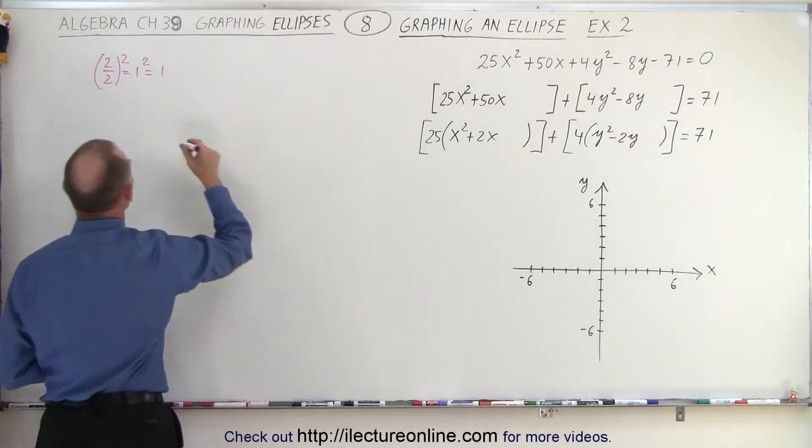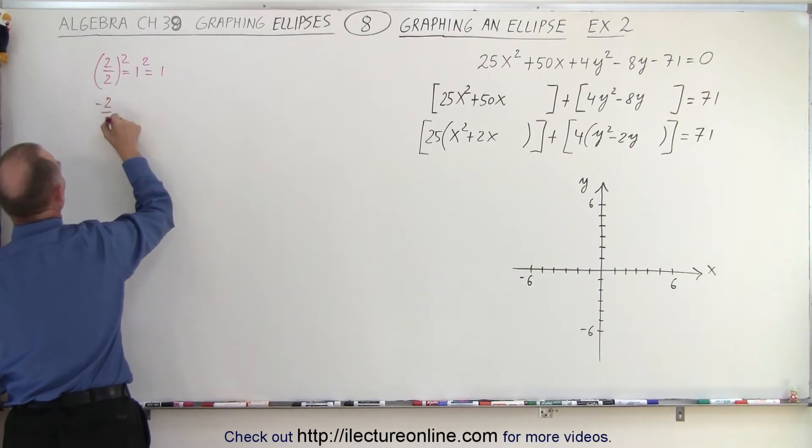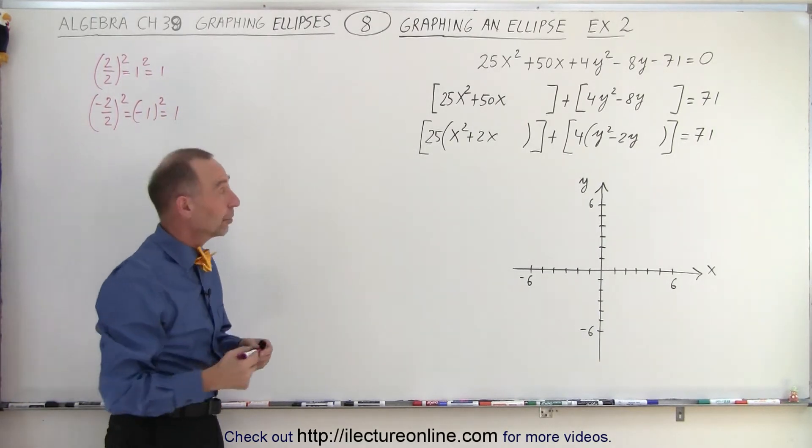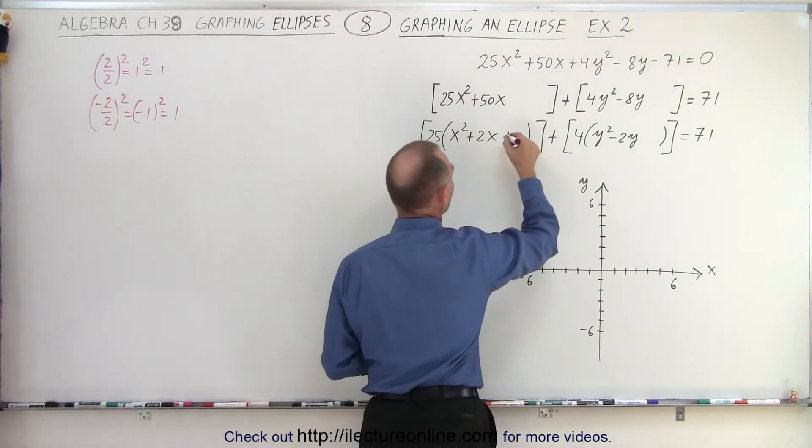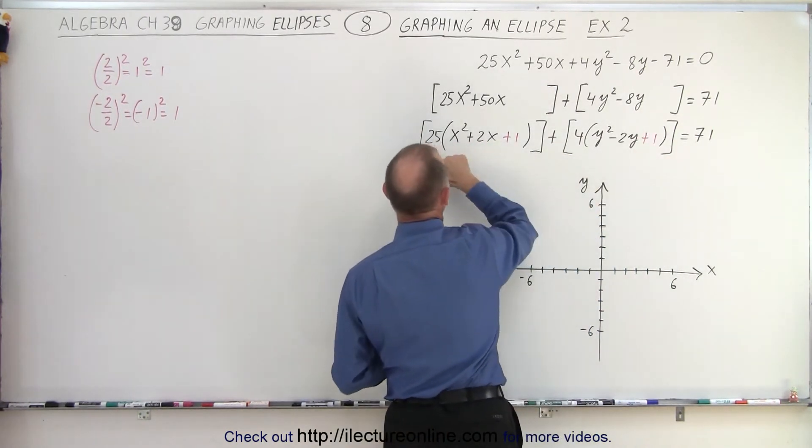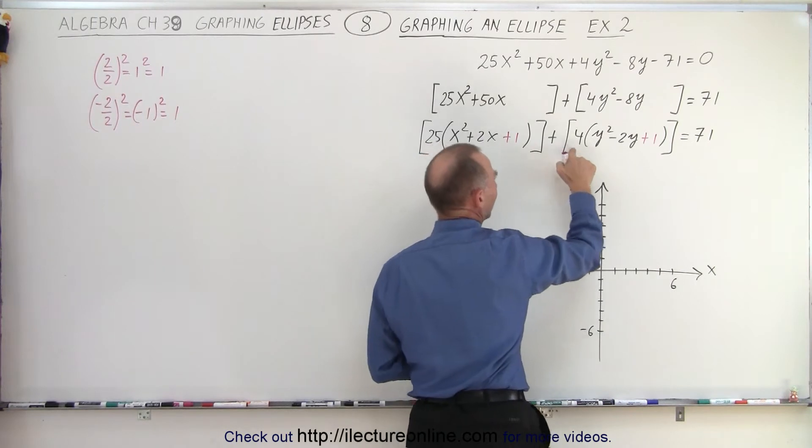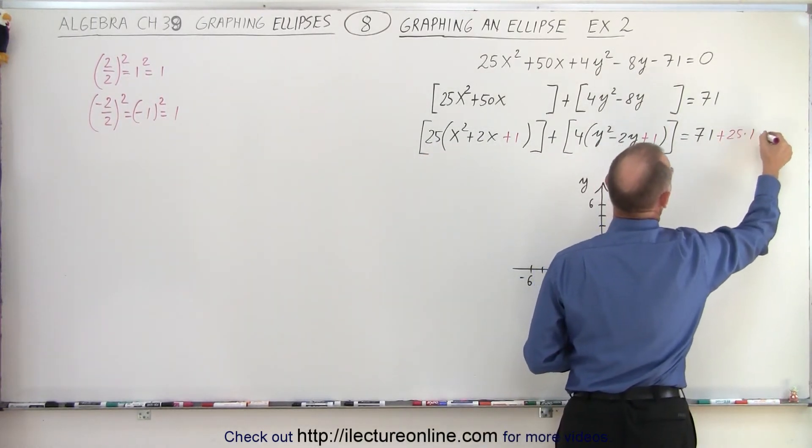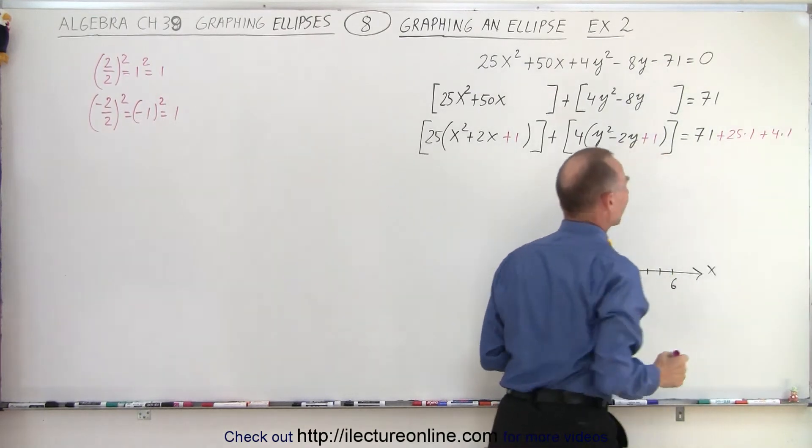For the second one, we get -2 divided by 2, square it, so we get (-1)² which is also 1. So we add 1 to both sides, we add +1 here and +1 there. But notice I'm also multiplying times 25 and times 4, so on the right side, I go +25×1 and +4×1. We can't forget that.